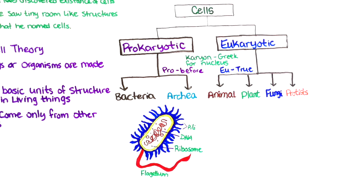Prokaryotic cells have ribosomes, which are the protein builders or the protein synthesizers of the cell. They're like construction workers who connect one amino acid at a time and build long chains. Ribosomes are found in both prokaryotic and eukaryotic cells; however, their compositions differ.